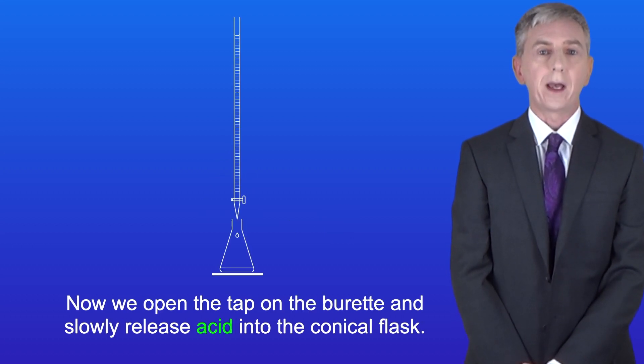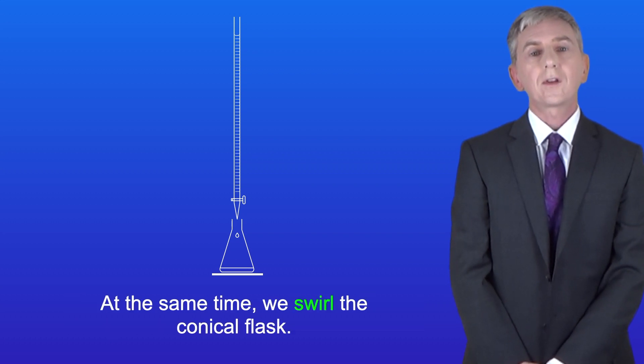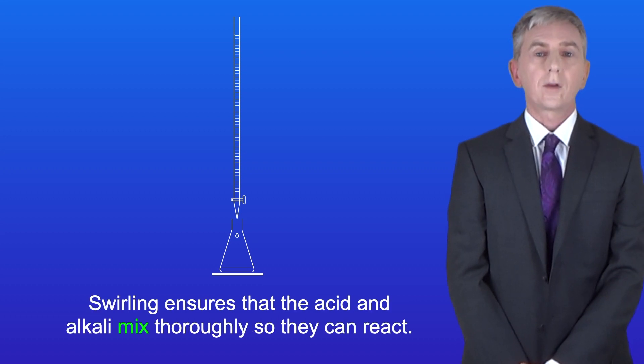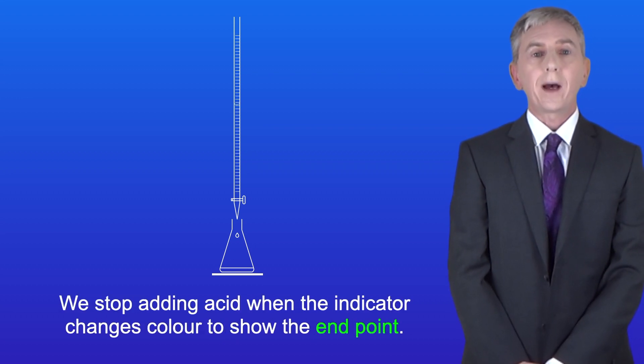Now we open the tap on the burette and slowly release acid into the conical flask. At the same time we swirl the conical flask. Swirling ensures that the acid and alkali mix thoroughly so they can react. Now while we swirl we need to watch the color of the indicator. We stop adding acid when the indicator changes color to show the end point.